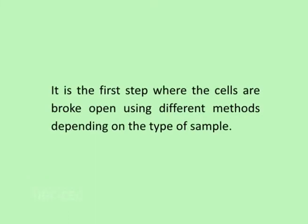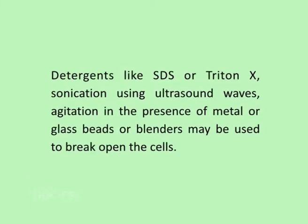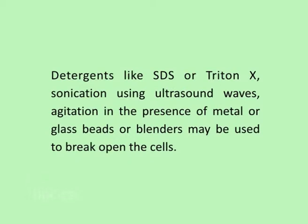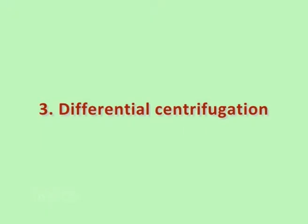The next step is homogenization. It is the step where cells are broken open using different methods depending on the types of sample. Detergents like SDS or Triton X, sonication using ultrasound waves, agitation in the presence of metal or glass beads, or blenders may be used to break open the cells. Homogenization commonly involves placing the cells in a closed glass vessel in which a tight-fitting plunger is inserted and rotated with a downward force to disrupt the cells.